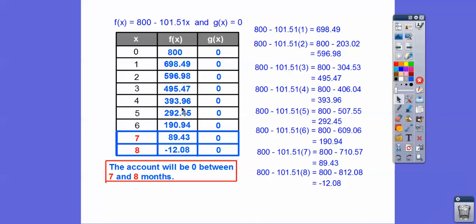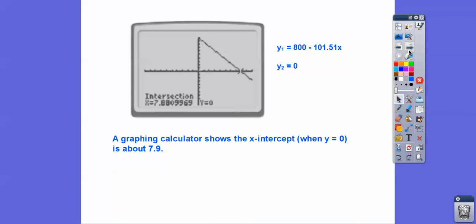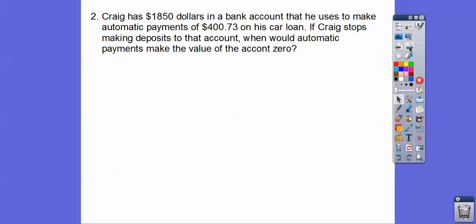See, here's what we did when we built the table right there and we did all that number crunching to get these tables. It went from positive $89.43 to a negative right there. So somewhere between the 7th and the 8th month. Okay, so here's our graphing calculator that showed that. Here's the x-intercept right there. We still get 7.9 or between the 7th and 8th month.